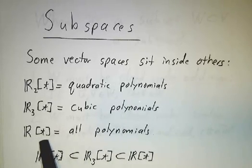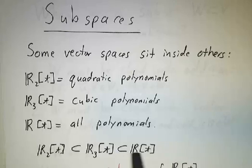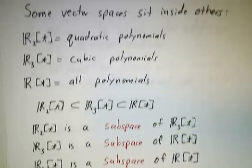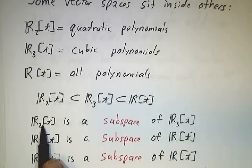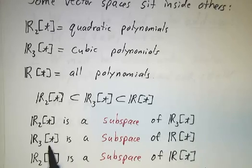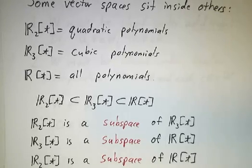If we let R(t) be all polynomials, then every quadratic polynomial is also a cubic polynomial, and every cubic polynomial is a polynomial. So we have one vector space sitting inside another, sitting inside a third. The terminology we use for this is subspaces: the quadratics are a subspace of the cubics, the cubics are a subspace of all polynomials, and the quadratics are a subspace of all polynomials.